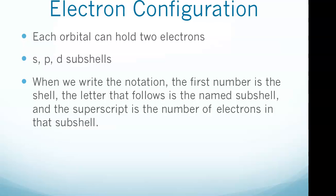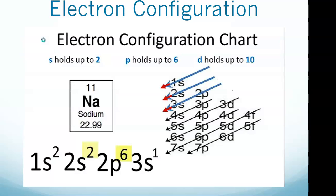When we write out the actual notation, the first number is the shell, the letter that follows is the subshell name, and the superscript is the number of electrons in that subshell. For example, sodium is atomic number 11, meaning it has 11 electrons. Its configuration is written as 1s² 2s² 2p⁶ 3s¹. Adding up 2, 2, 6, and 1 gives us 11 electrons.